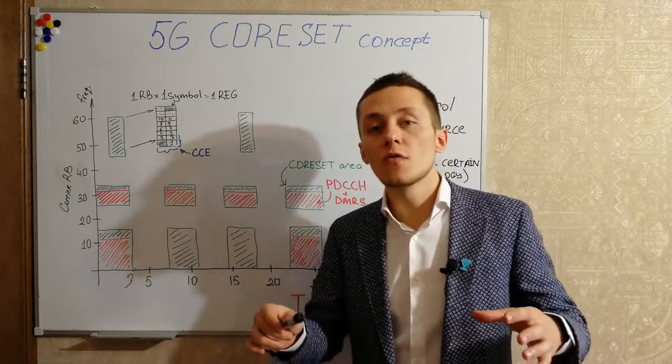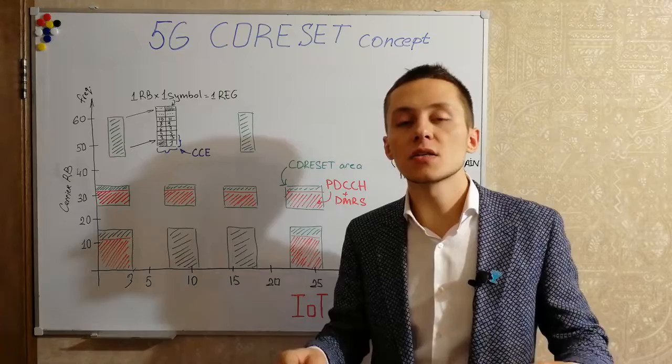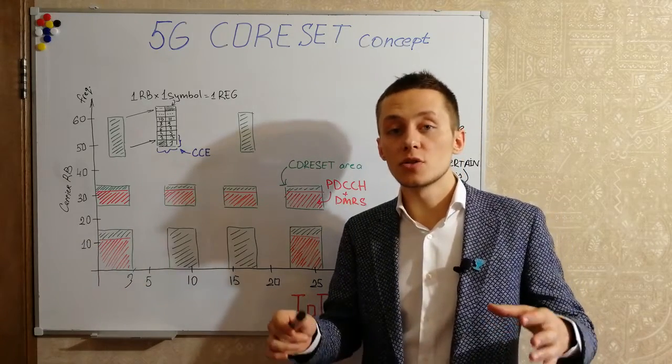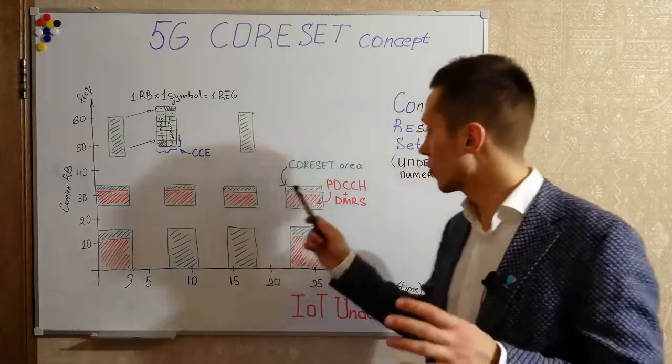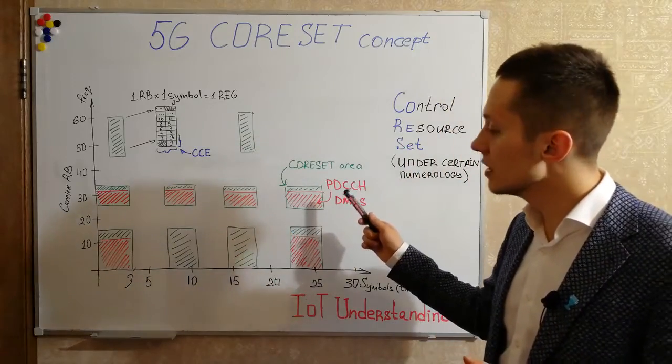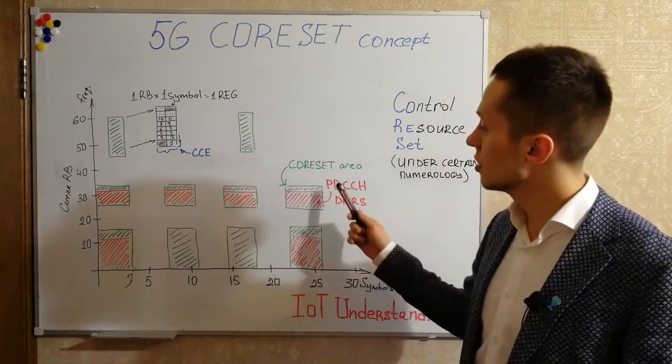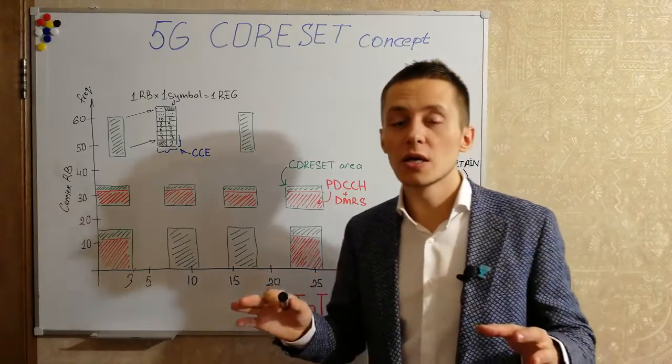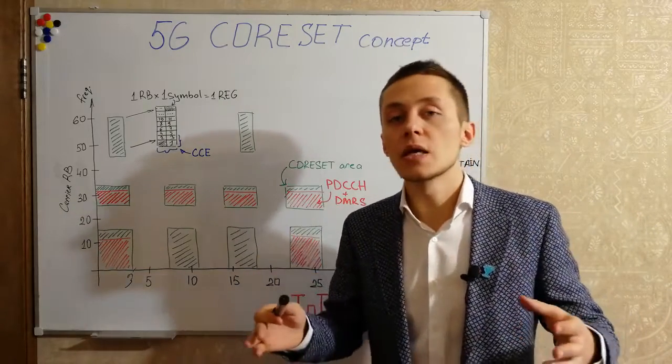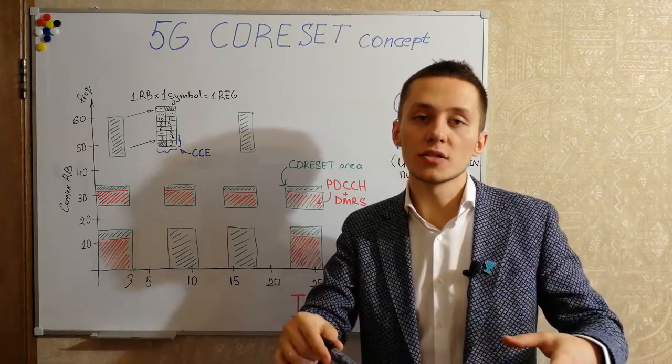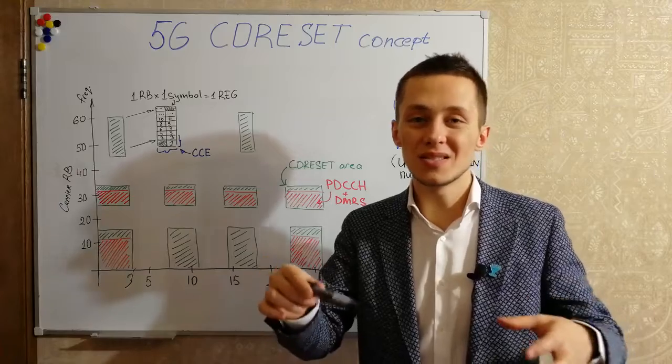And actually for initial access, for random access response message, the information about core set configuration for initial access is inside broadcast channel, it is inside PBCH.